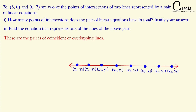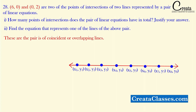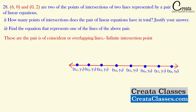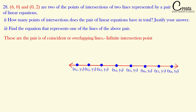So the question framer wants to project that the two lines are overlapping with each other, and just two points are given as (6, 0) and (0, 2). The first part asks how many points of intersection the pair of linear equations has in total. The answer is that these two linear equations will have infinite number of points, as they are overlapping with each other.